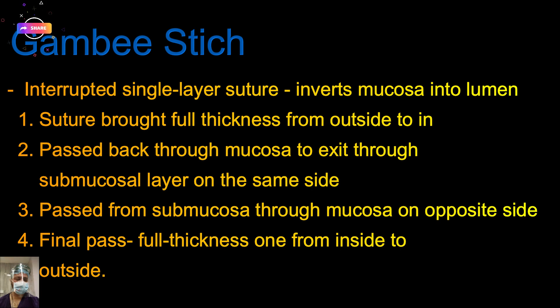First, the suture is passed from the outside as a full-thickness pass. Then it is passed back through the mucosa to exit through the submucosa layer on the same side. Then it is passed from the submucosa to the opposite side. The final pass is again full thickness. You will better understand with the pictorial depiction and during the live surgery.